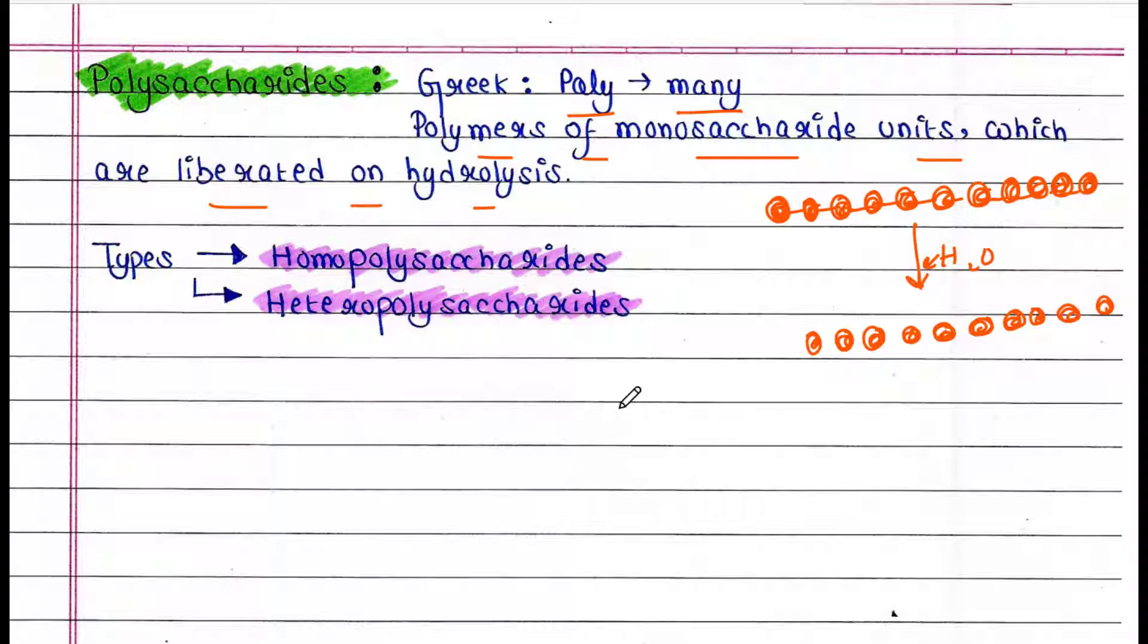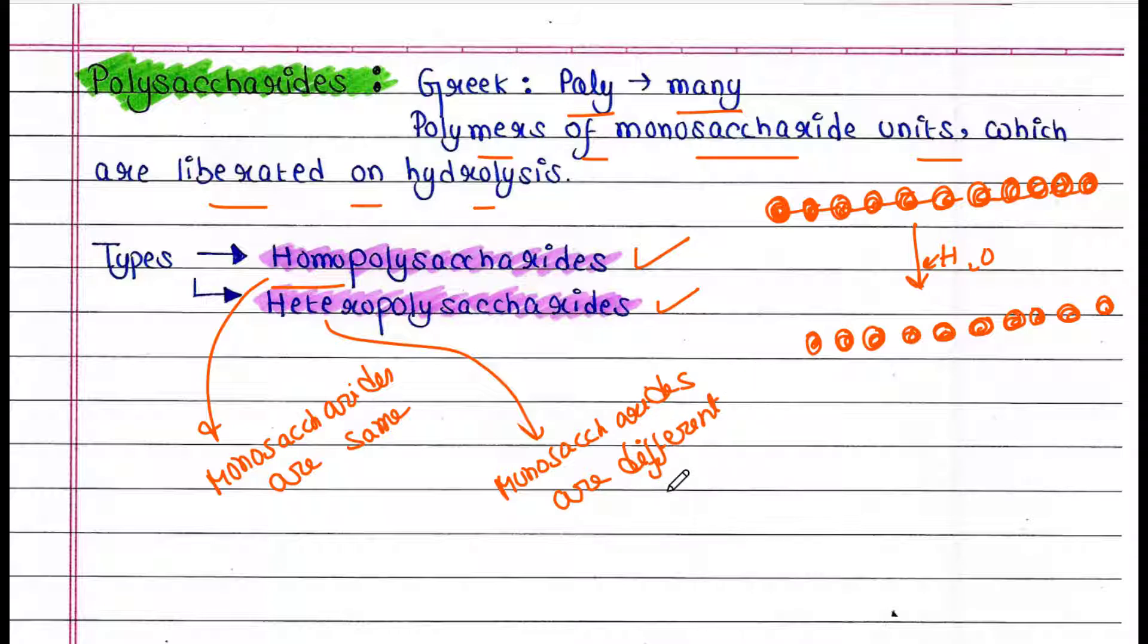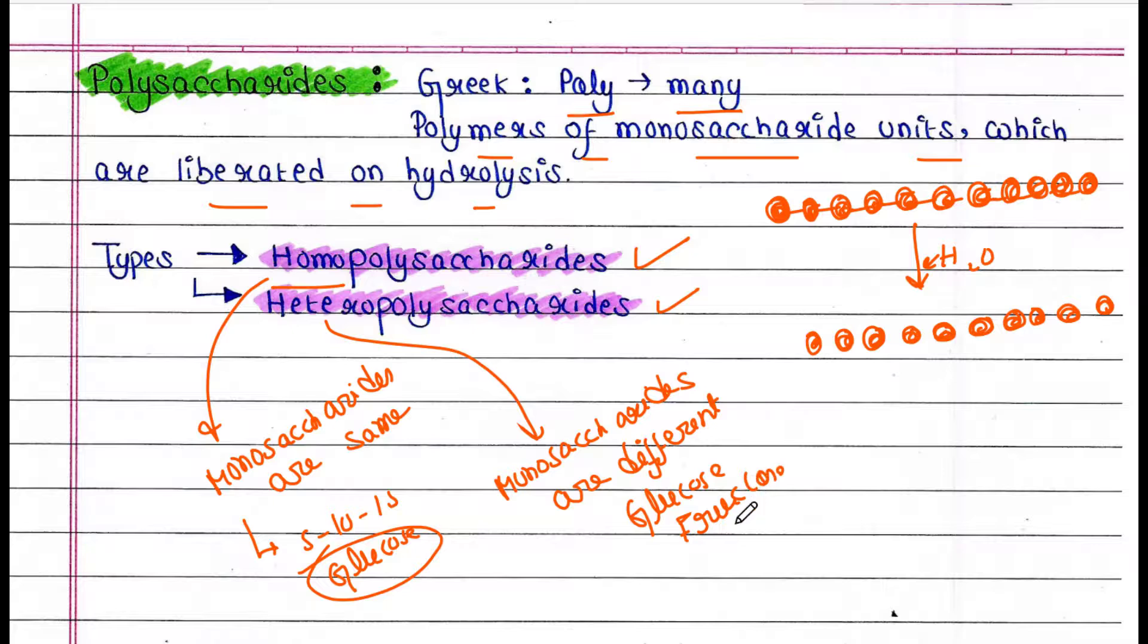And there are mainly two types of polysaccharides: homopolysaccharide and heteropolysaccharide. Homo means all the monosaccharides are same. Hetero means monosaccharide units are different. Just an example I can give you: in homopolysaccharide you can find 5 to 10 to 15 or many glucose units only. In heteropolysaccharides you can get glucose, you can get fructose, etc.